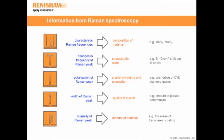Finally, the intensity of the Raman peak can be used as a method to characterise amounts of material. So if we probe a thin film, we can use the intensity of the Raman peak to gauge how thick the film is, and if there's any variation along its surface.